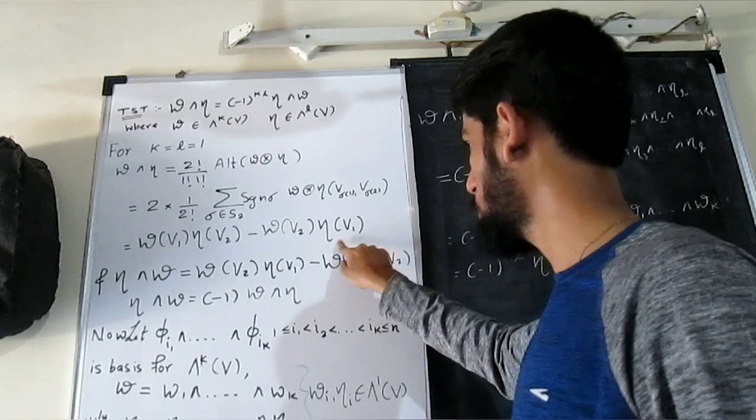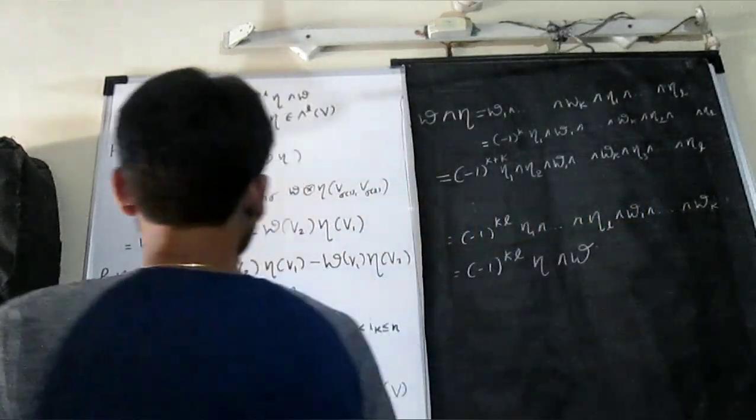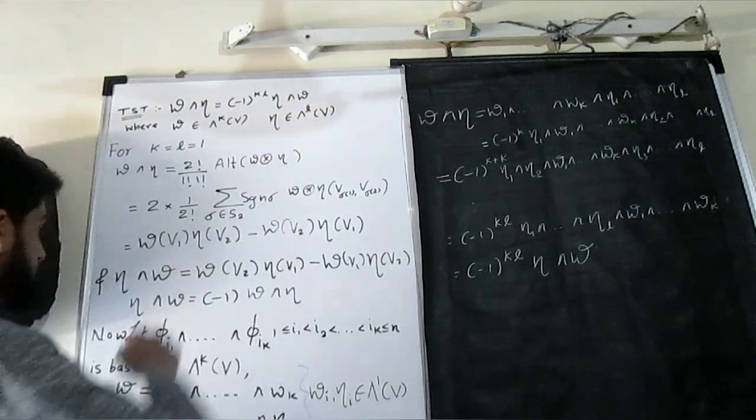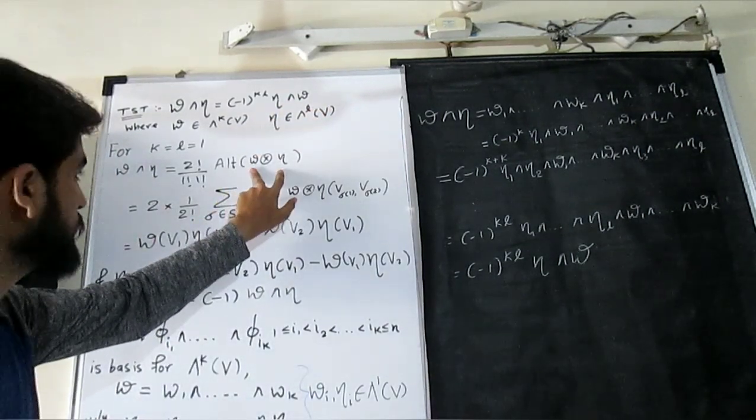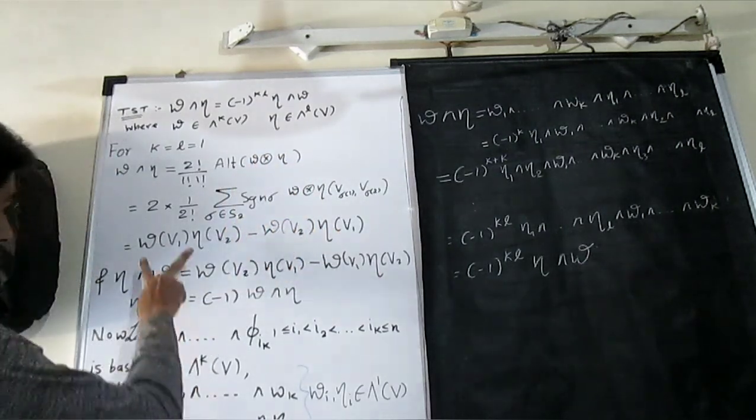So we have minus 1, 1 goes to 2, 2 goes to 1, so we get this. And if you see the other way round, that means if you see this product, then you will notice that in the definition you have to swap these two.